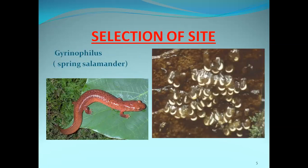Another example for selection of site is Gyrinophilus, also called the Spring Salamander. Spring Salamanders lay their eggs under stones and attach them to the stone so that water currents cannot wash the eggs away. They select sites where water currents cannot damage or wash away the eggs.